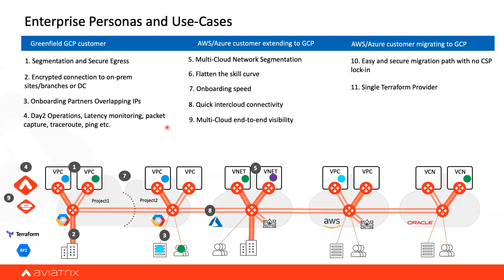Now, if we talk about multi-cloud aspects — where a customer is already present in AWS and is now extending into GCP — all the use cases on the left-hand side are also applicable here, but their intensity increases. The problem statement and pain point grows because of the nature of multi-cloud.